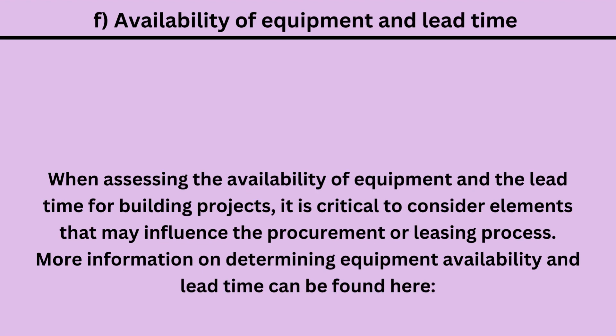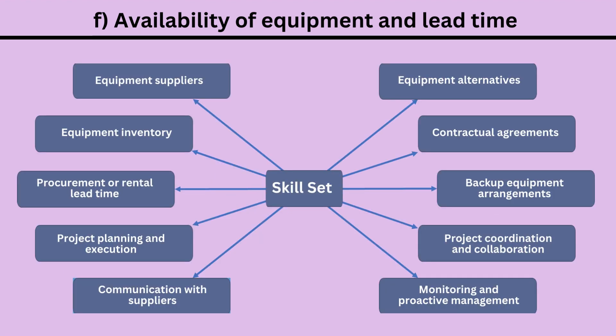F. Availability of equipment and lead time. When assessing the availability of equipment and the lead time for building projects, it is critical to consider elements that may influence the procurement or leasing process. Key factors include: 1. Equipment suppliers. 2. Equipment inventory. 3. Procurement or rental lead time. 4. Project planning and execution. 5. Communication with suppliers. 6. Equipment alternatives.